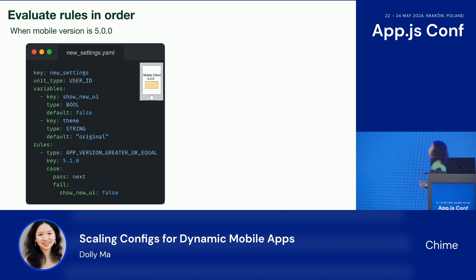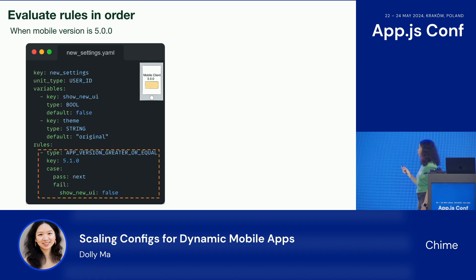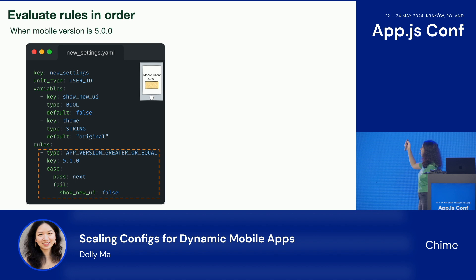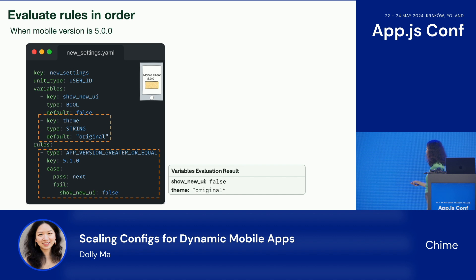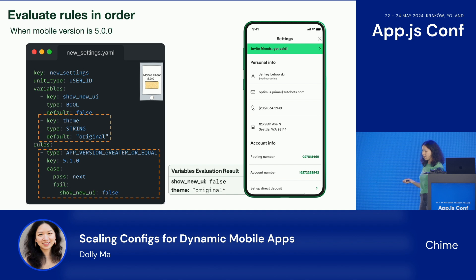First example: when the mobile version is 5.0.0. The first rule is app version greater or equal to 5.1.0. Since our mobile version is smaller than that, we fail the rule. It falls to show new UI as false. And since theme is not listed here, we fall back to the default value, original. The evaluation result: show new UI false, theme original. And this is the UI to show.